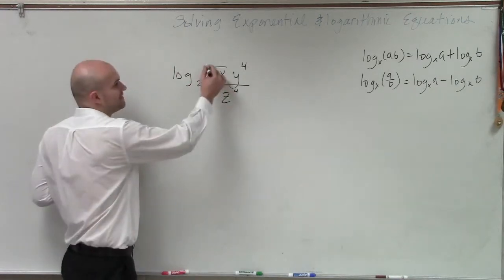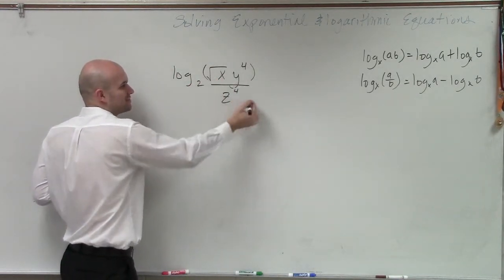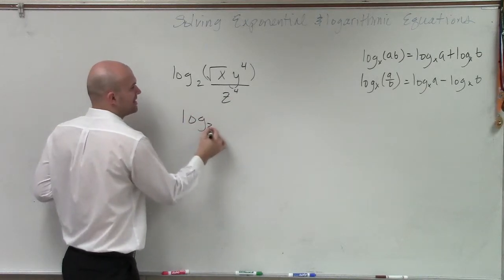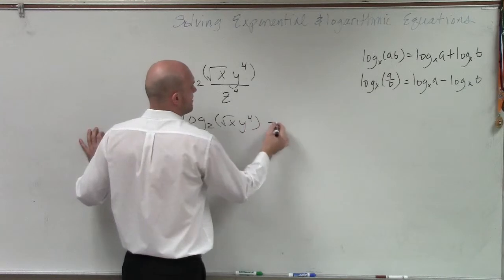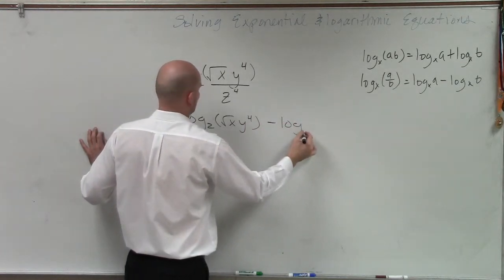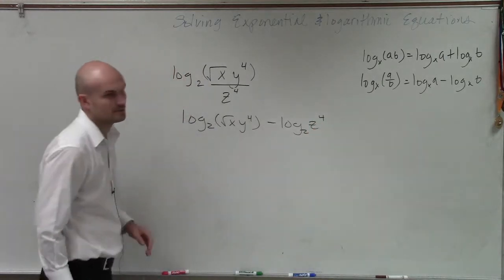So therefore, you can see that I have this expression divided by this quotient. I'm going to break this up and do log base 2 of the square root of xy to the fourth minus log base 2 of z to the fourth. Right?